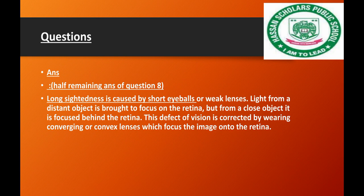Long-sighted people have light from a distant object focused correctly, but light from a close object is focused behind the retina, so the retina does not make a clear image.